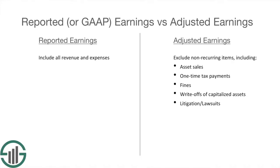The differences between reported earnings and adjusted earnings are summarized in the screen that you see now. Reported earnings shows all revenue and expenses incurred by the business in the reporting period, and they're sometimes called GAAP earnings because they adhere to generally accepted accounting principles, or GAAP for short. Adjusted earnings are different — they exclude all accounting items that are likely to not be repeated by the business, including things like asset sales, one-time tax payments, fines, or lawsuits. The big conceptual difference here is that adjusted earnings give you a sense of the business's future earnings power. Adjusted earnings are repeatable, while sometimes reported earnings are not.